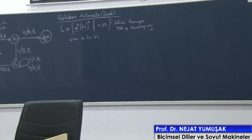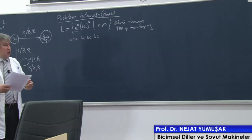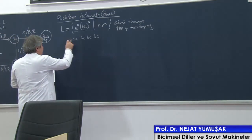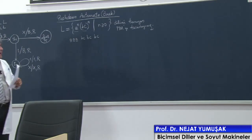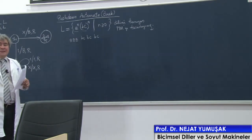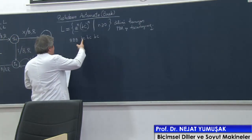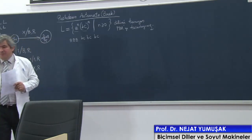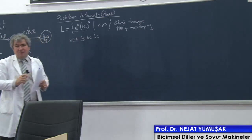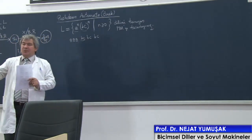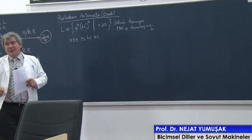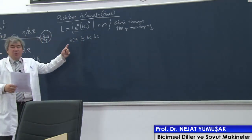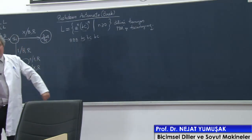Şimdi ne yapmamız gerekiyor? Nasıl çalışacak bizim makinemiz? Şöyle çalışacak: okuduğum her A için yığıta bir simge göndereyim. B okuyunca yığıta hiçbir değişiklik yapmayacağım. Ama B'den hemen sonra C'yi okursam yığıttan bir A çıkarabilirim — yani bir simge çıkarabilirim. C'yi okuduğum zaman yığıttan bir simge çıkarıyorum.